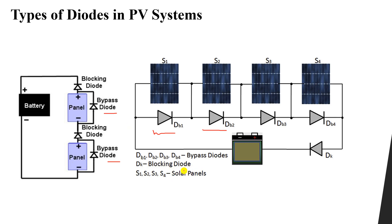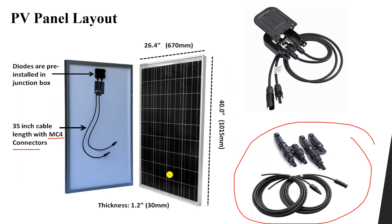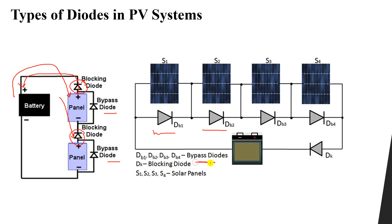There is another type called blocking diodes. Blocking diodes prevent power flow from the battery to the panels. During the day, the panels supply electrical power to charge the batteries. At night, the panels produce no power, so without a blocking diode the battery would start supplying power to the panels, which could lead to burning of the panels. So we need blocking diodes to prevent that reverse power flow at night.